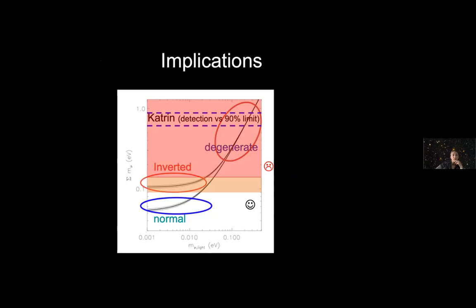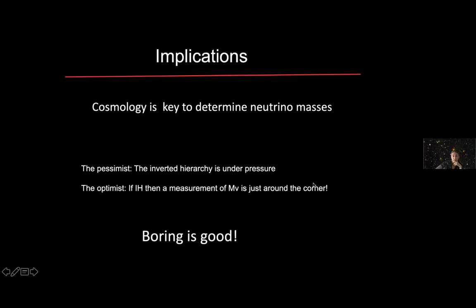The implications are, if we believe the strongest cosmological constraint, the inverted hierarchy is under pressure. Cosmology is key to determine neutrino masses. For the pessimist, the inverted hierarchy is under pressure. For the optimist, if it's inverted hierarchy, then a measurement of the neutrino mass from cosmology is just around the corner. This is an example of how boring is good.